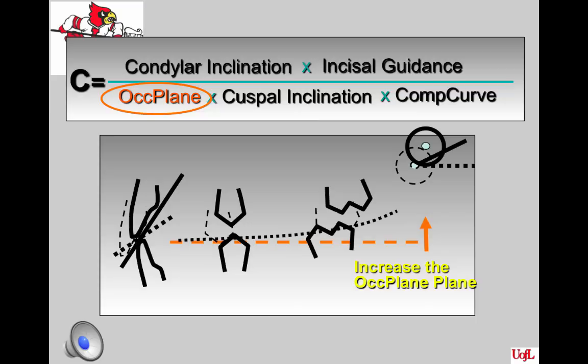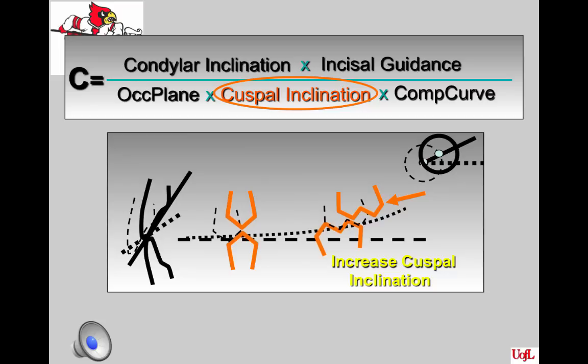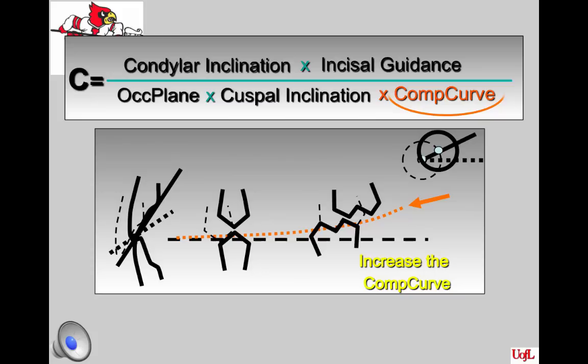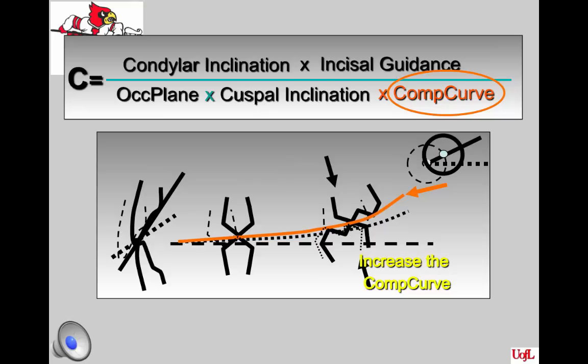One option is to increase the occlusal plane, as illustrated on the slide. A second option would be to increase cuspal inclination — the cusp will end up taller, decreasing the space created in protrusive. Lastly, we can increase the compensating curve, bringing it up so that the premolars and molars are in contact when we go into protrusive. This illustrates the change in the compensating curve and its effect upon the incisal guidance: because we increased that compensating curve, the posteriors are now in occlusion when the patient goes into protrusive.